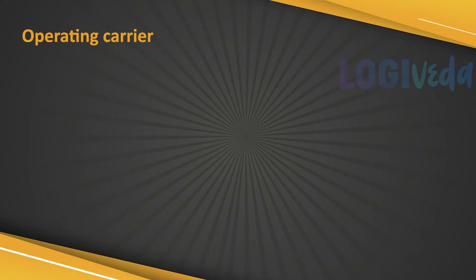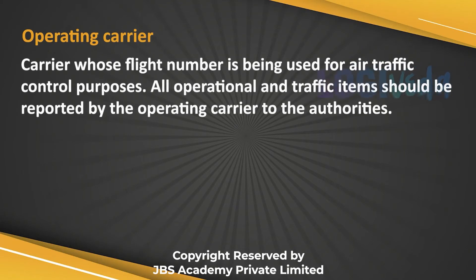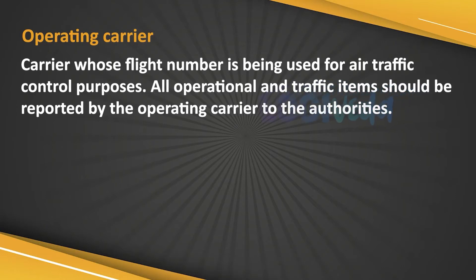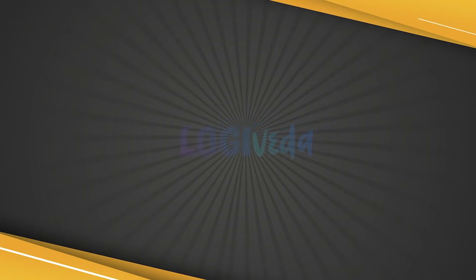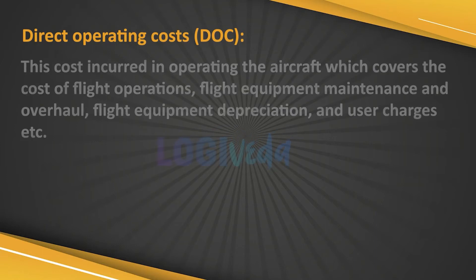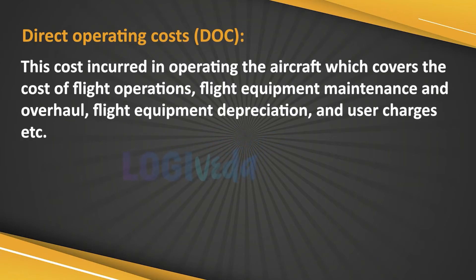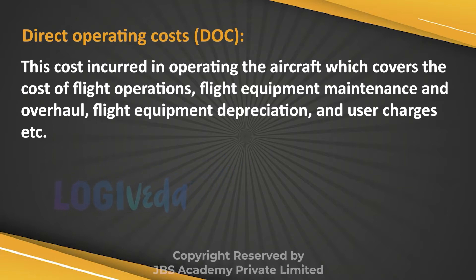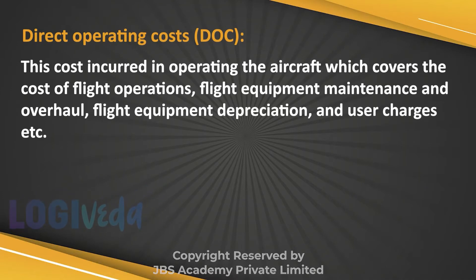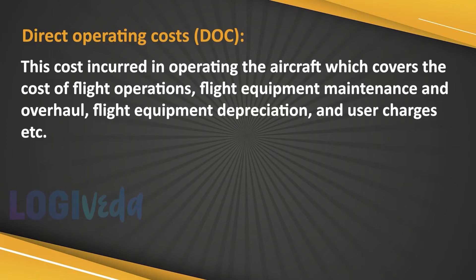Operating carrier: the carrier whose flight number is being used for air traffic control purposes. All operational and traffic items should be reported by the operating carrier to the authorities. Direct operating cost, also known as DOC: the cost incurred in operating the aircraft, which covers flight operation, flight equipment maintenance and overhaul, flight equipment depreciation, and user charges.